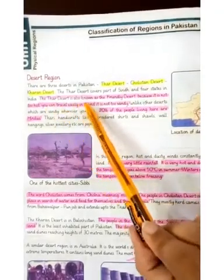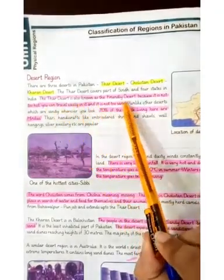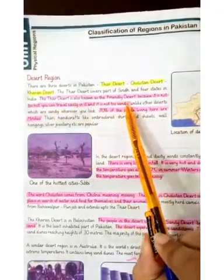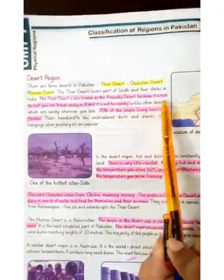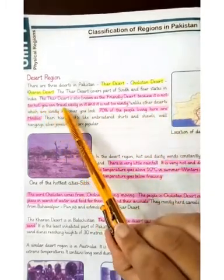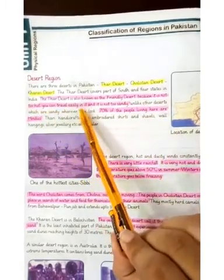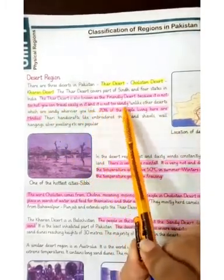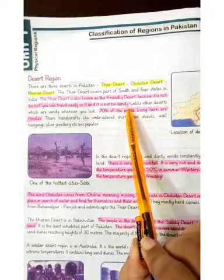The Thar desert is also known as a friendly desert because it is not too hot. You can travel easily in it and it is not too sandy.